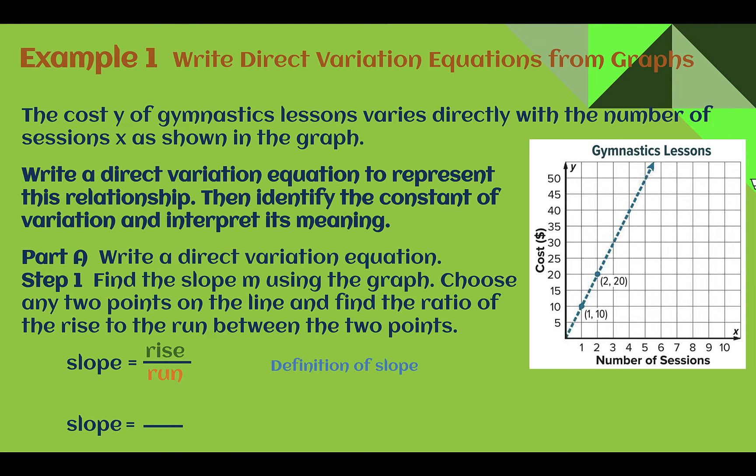Example 1. Write direct variation equations from graphs. The cost y of gymnastics lessons varies directly with the number of sessions x as shown in the graph. Write a direct variation equation to represent this relationship, then identify the constant of variation and interpret its meaning. So we can see here in our graph we have our cost as our change in y, our rise, and our number of sessions is our change in x, or our run.